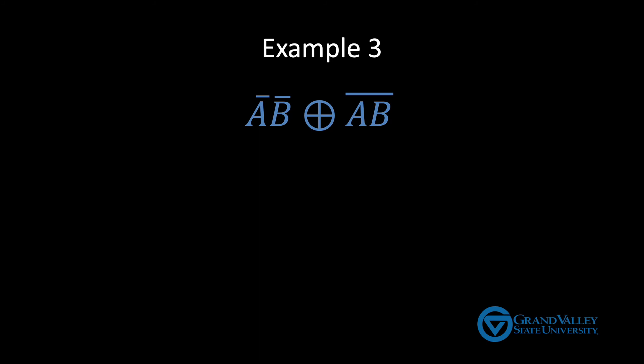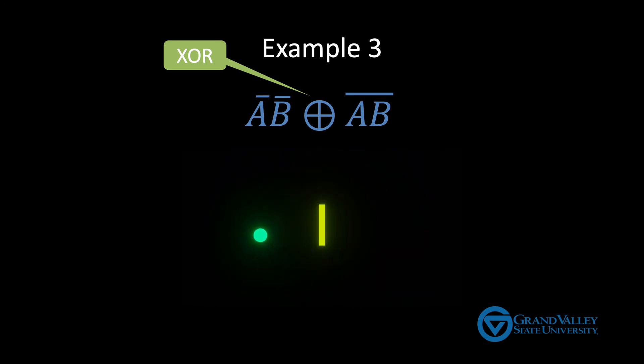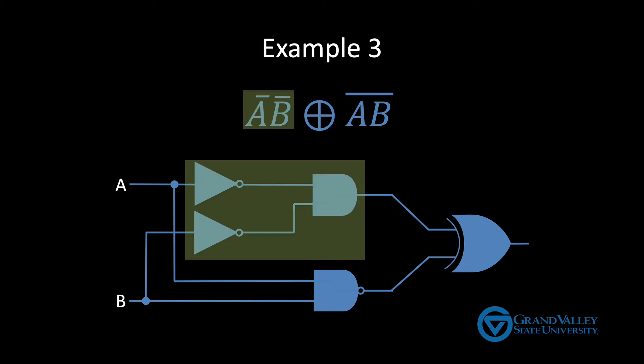One last example. By the way, this symbol in the middle means XOR. Here's my solution. In this example, the main thing to pay attention to is the difference between there being separate bars over A and B and there being a single line over the product of A and B. When they're separate lines, that means A is negated and B is negated, and then it's fed into the AND gate. Whereas when you have that line over the product of A and B, then you're negating the AND, which gives the NAND gate we see here.